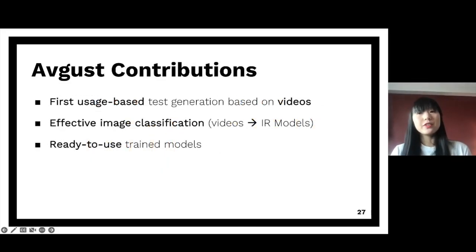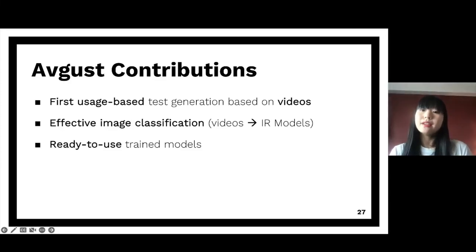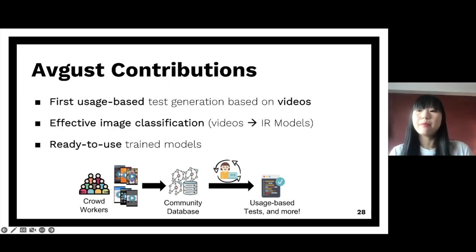To summarize, August is the first usage-based test generation technique that can learn from app videos. It has an effective image classification technique to convert app-specific videos into app-independent IR models, which allows you to reason about behaviors, compare across different apps, and opens new research possibilities. We also provide trained models ready to use. In the future, we envision August having many potentials with community efforts — such as crowd workers providing videos, a community database storing learned IR models for developers to generate tests, and researchers studying app behaviors.